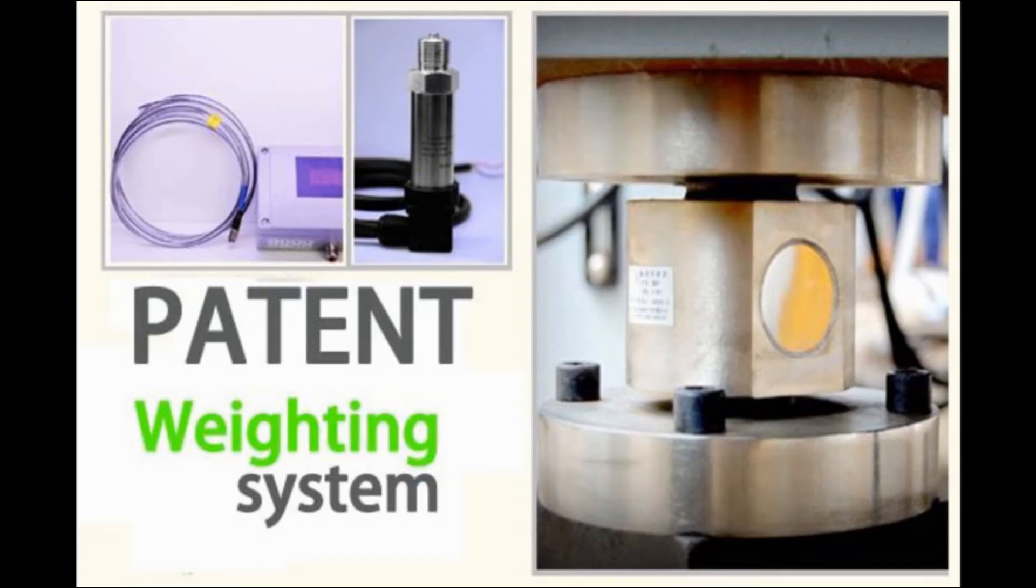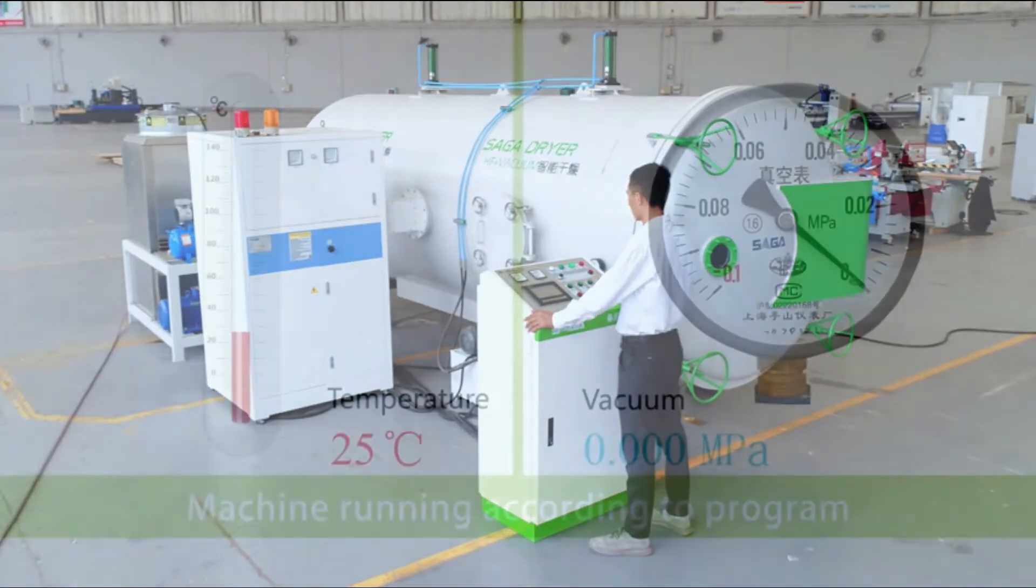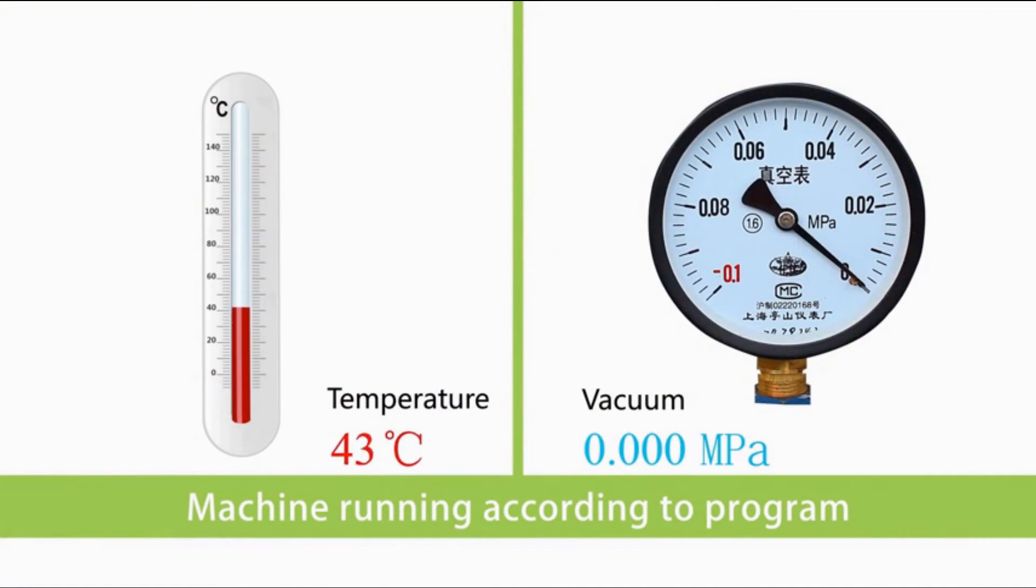There is a weighing system to calculate the moisture inside the wood. When the water is out of the tank, the weight becomes lighter and the moisture is lower. One button starts the machine and it will run automatically.